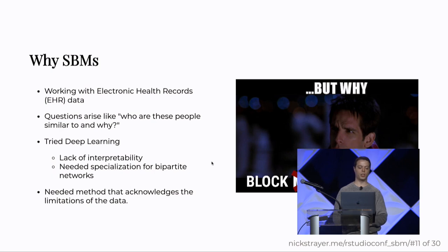So the first thing that I tried was deep learning methods. So these worked well, but they had a couple of problems. One is that they lacked interpretability. It could tell you that these nodes were similar to each other, but it wouldn't tell you why it said that. And it needed specialization for these networks that have multipartite structure. And then also we wanted a method that acknowledges the limitations of the data. Statisticians are very interested in uncertainty and neural networks. Again, there are ways that you can get uncertainty out of them, but they are not fundamentally built with that idea in mind.